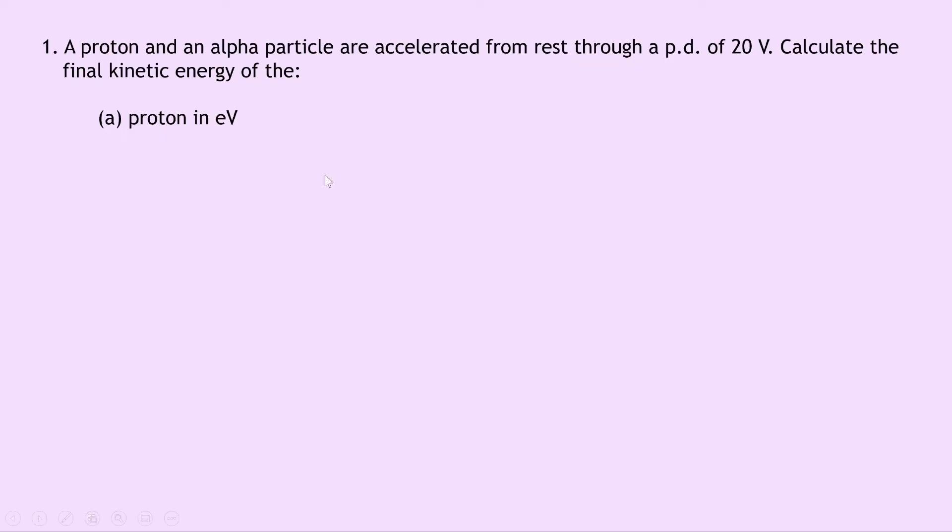So let's get started. Question 1 says that a proton and an alpha particle are accelerated from rest through a potential difference of 20 volts. Calculate the final kinetic energy of the proton in electron volts. To do this question we need to use some of the ideas that we looked at in the video for charge moving parallel to an electric field.